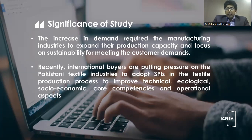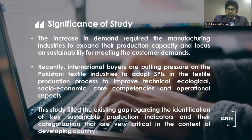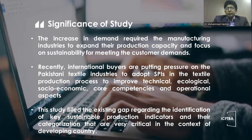Recently, international buyers are putting pressure on Pakistani textile industries to adopt sustainable production indicators in the textile production process to improve technical, logical, socio-economic, core competencies, and operational aspects. Thus, this study filled the existing gap regarding the identification of key sustainable production indicators and their categorization, which are very critical in the context of a developing country and textile industries.